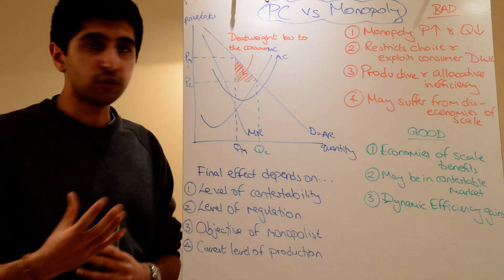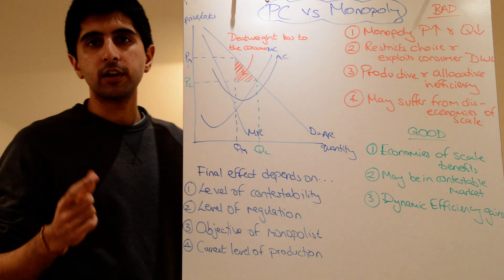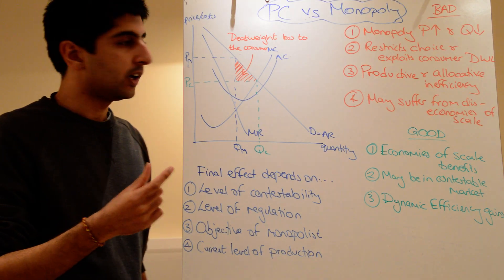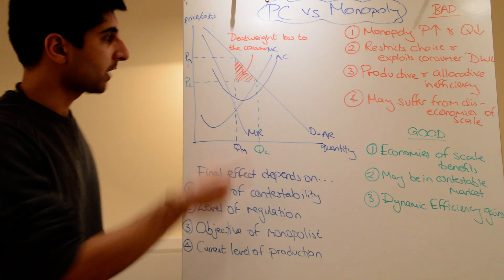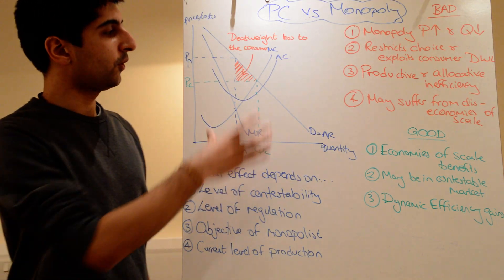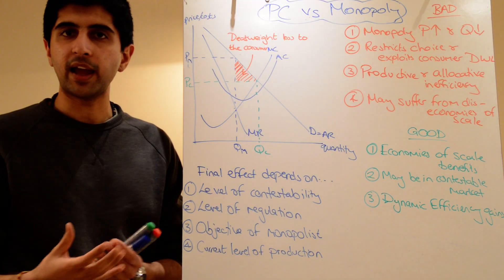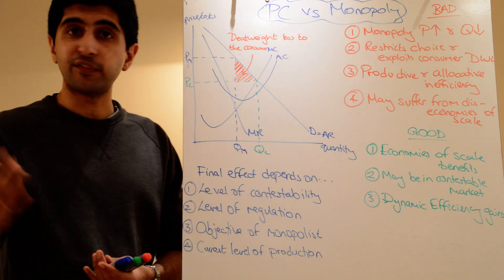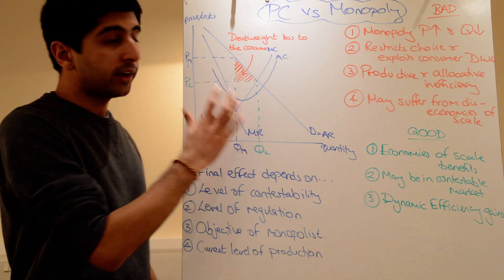So, when we're looking at the effect on the consumer, that red triangle is a great way to illustrate that the consumers are massively exploited. Okay? So, this diagram is very useful. It's called the deadweight loss diagram. So, anytime you're trying to show the negative effects of monopoly or the positive effects of perfect competition, this is a great diagram to use.